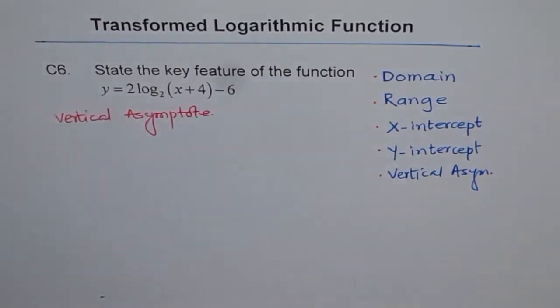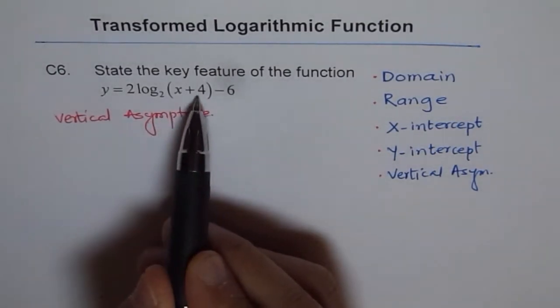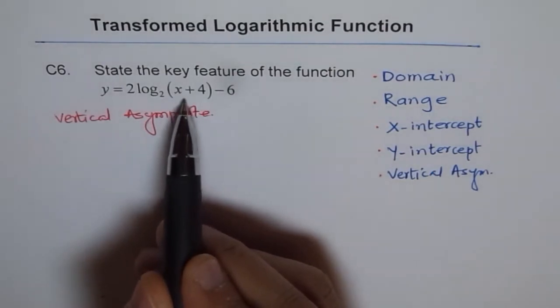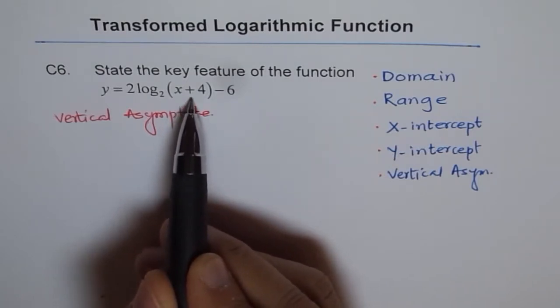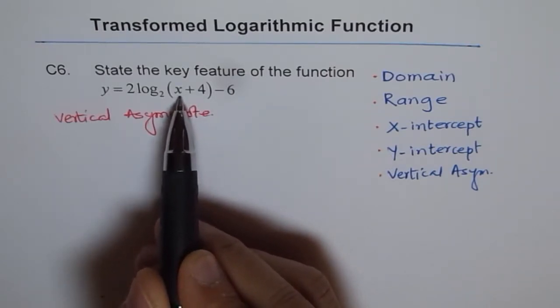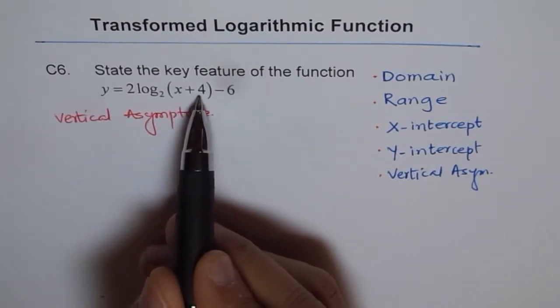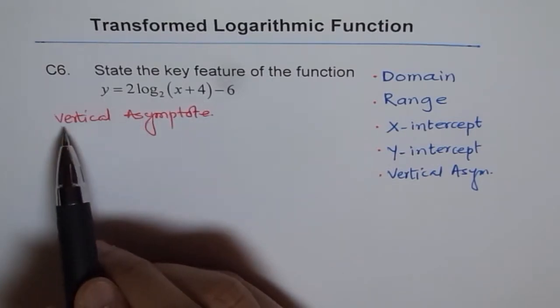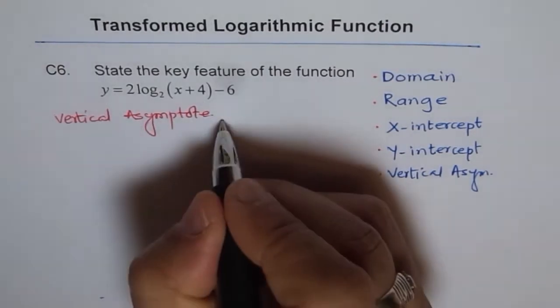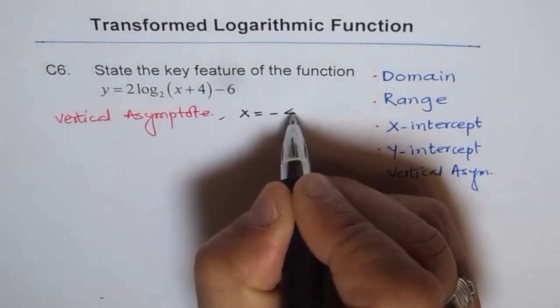So normally, the vertical asymptote is at x equals 0. Now this term here decides how the vertical asymptote can change, because this term says that your graph gets shifted left or right. So once you shift left or right, vertical asymptote will shift. Now, according to this, there is a translation, horizontal translation, of 4 units to left.